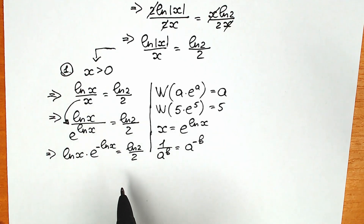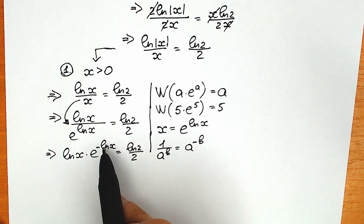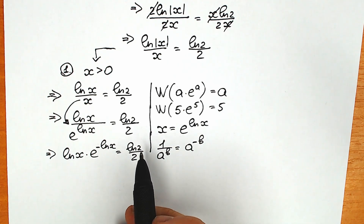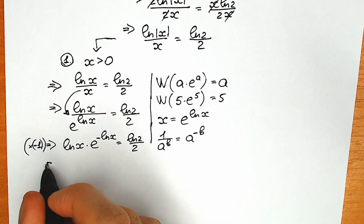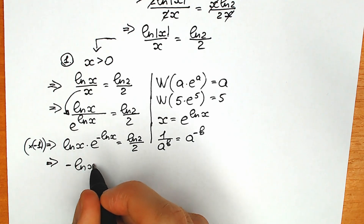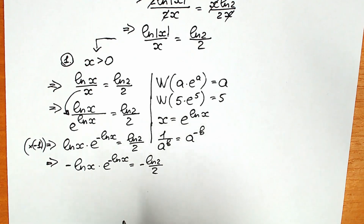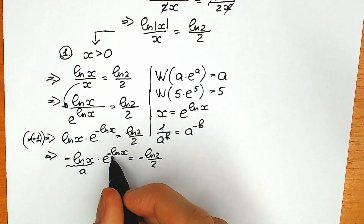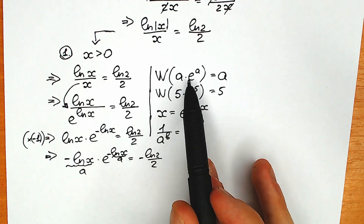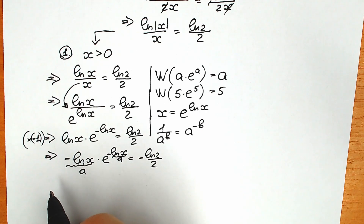We just brought this to our numerator. If you look closely, we have e — we need to have e, and we have it. We have natural log x and the same natural log x in the exponent, but with a negative. So for better understanding we need to multiply both sides by negative 1. We get minus natural log x times e to the power minus natural log x equal to minus natural log 2 over 2. If we look closely, minus natural log x is our a, and this is also our a — we have the structure a times e to the power a. So we can easily apply the Lambert W function.